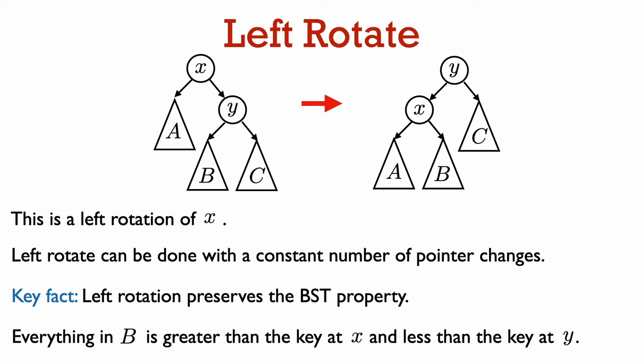The other key fact about rotation is that it preserves the BST property. We know that the key at node Y is bigger than the key at node X, because Y is the right child of X. So it is fine for X to be the left child of Y as it becomes after the rotation. Also, all the keys in the subtree B are larger than the key at X, since B is in the right subtree of X originally. Thus, it's fine for B to become the right subtree of X.